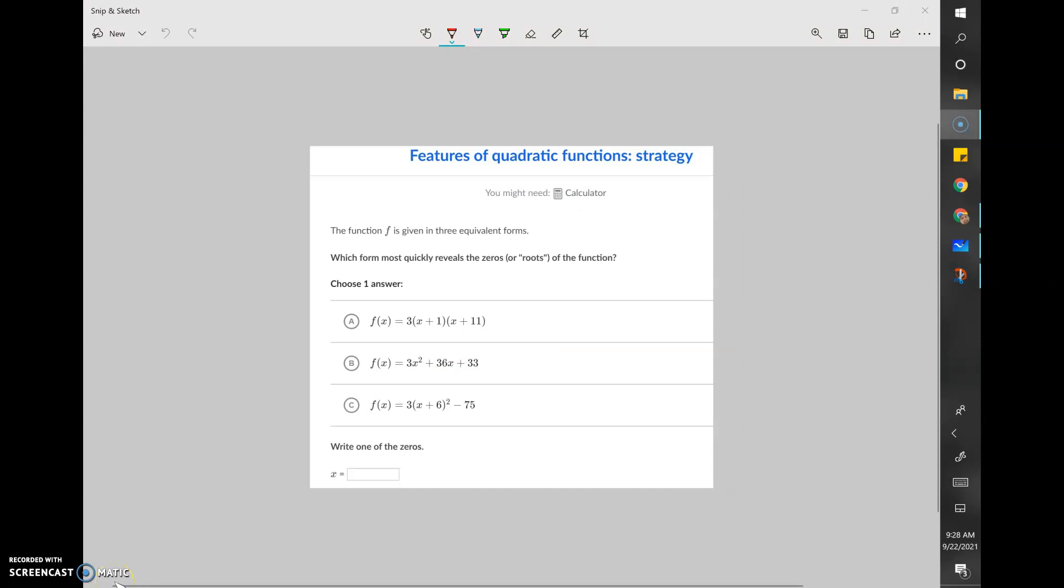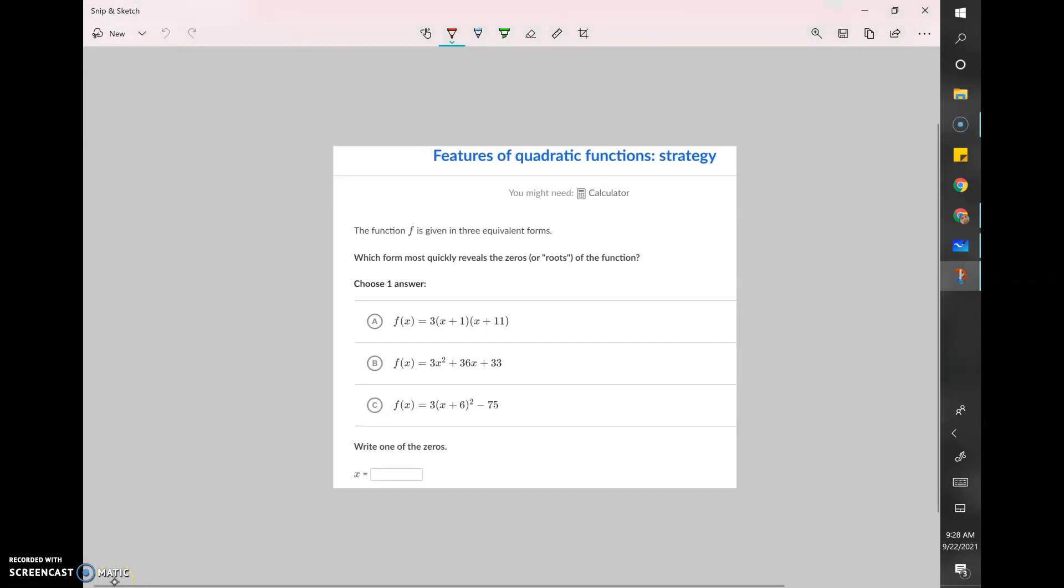Which of the forms quickly reveals the zeros or the roots? We know that this form is going to be factored form, so we're looking for the one that looks like this. Option A we got factor one and factor two. Just to cover them, we've got standard form for option B and vertex form for option C.